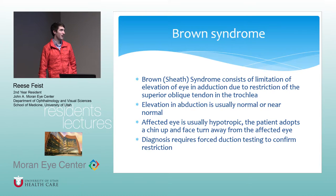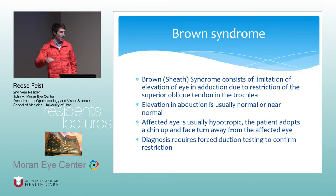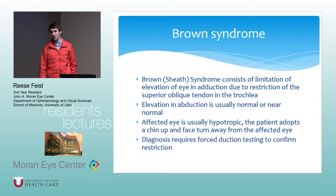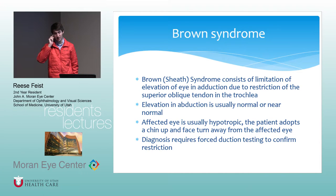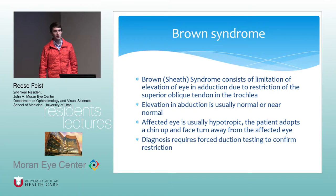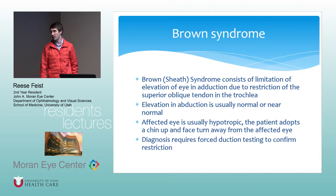Brown syndrome, or superior oblique sheath syndrome, is limitation of elevation of the eye in adduction due to restriction of the superior oblique tendon in the trochlea. Elevation in abduction is usually normal or near normal; the affected eye is typically hypotropic. The patient adopts a chin-up and face-turn away from the affected eye. Forced ductions are needed to confirm restriction within the trochlea. The two cases I've seen were traumatic — one was a child with severe facial fractures, and another was a patient hit in the face with a fin catch who had a significant hematoma and persistent hypotropia.